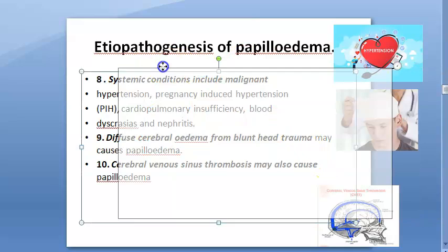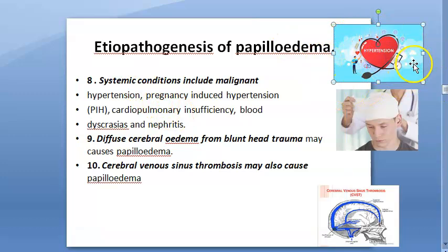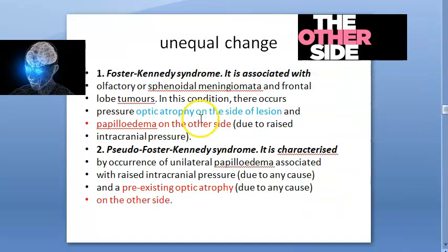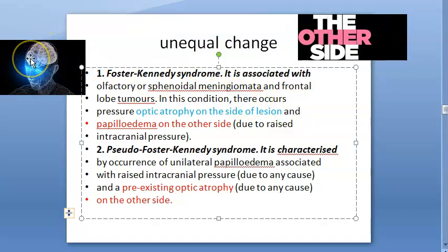Systemic conditions causing raised ICP include malignant hypertension, pregnancy-induced hypertension (PIH), cardiopulmonary insufficiency, blood dyscrasias, and nephritis. Blunt trauma to the head causing diffuse cerebral edema, and cerebral venous sinus thrombosis, are additional causes. Papilledema is usually bilateral, though it can be unequal on both sides.